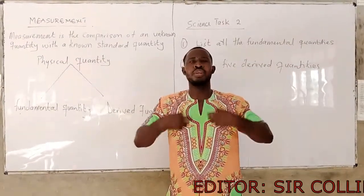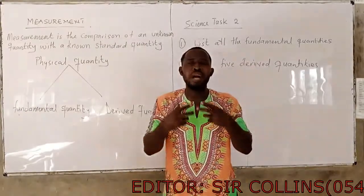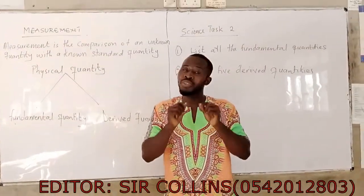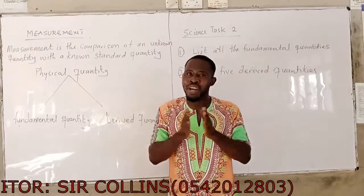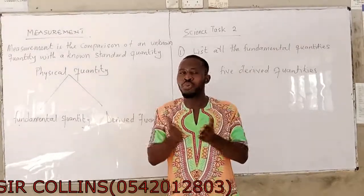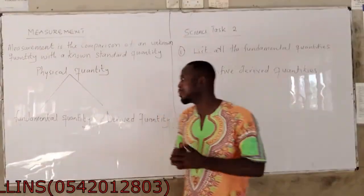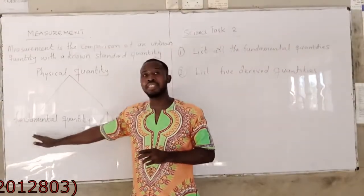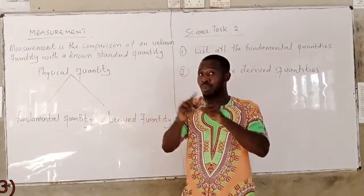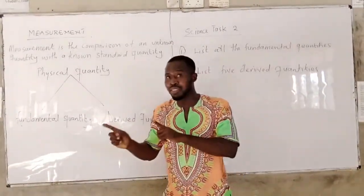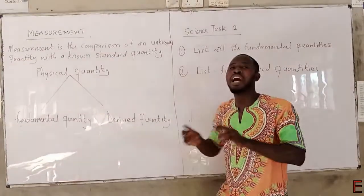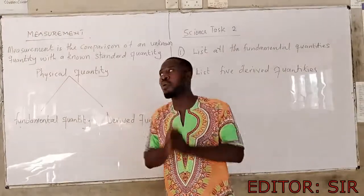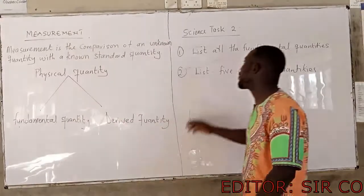I want you to think and come out with your own derived quantities — you should be able to write about five of them. A fundamental quantity is independent from other quantities, but derived quantities are formed from the combination of two or more.